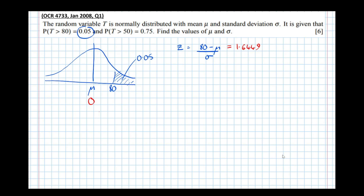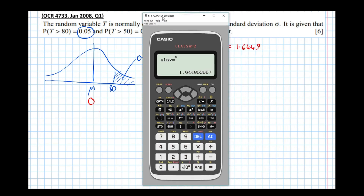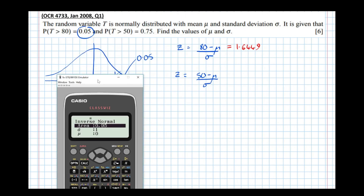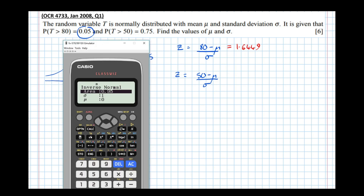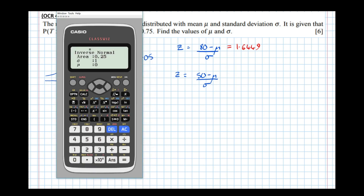Now let's do it again for the probability that t is greater than 50. The z value is (50 minus mu) over sigma. Going to the N(0,1) distribution — the probability that t is greater than 50 means the area to the right is 0.75, so the area to the left is 0.25. The boundary that has 0.25 area to the left on the N(0,1) distribution is minus 0.6745 from the mean. Because the standard deviation is 1, it also coincides with the number of standard deviations from the mean.